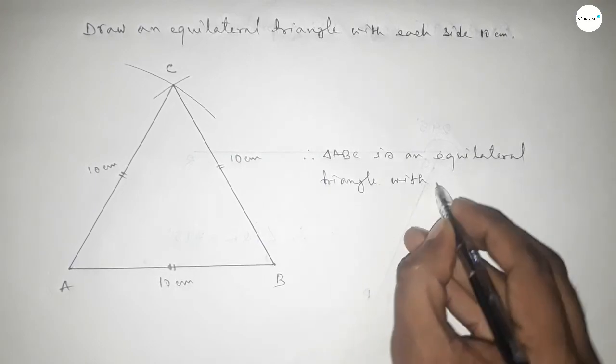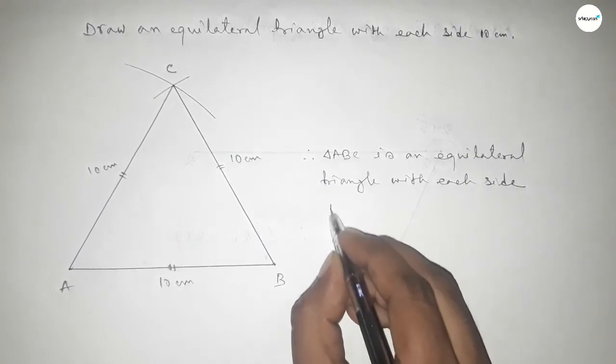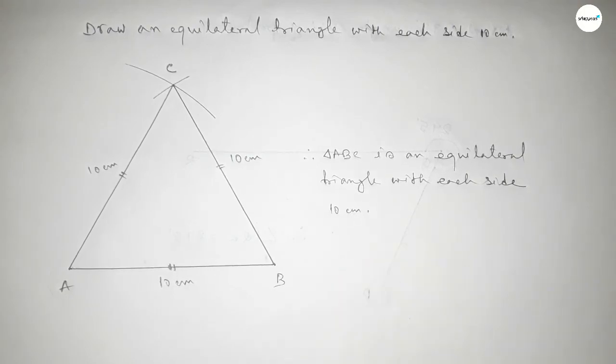So this is the process to construct an equilateral triangle with each side 10 centimeter. That's all, thanks for watching. If this video is helpful to you, then please share it with your friend. Thanks for watching.